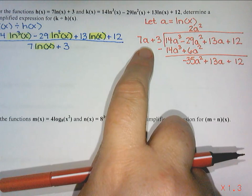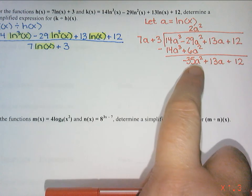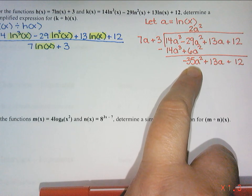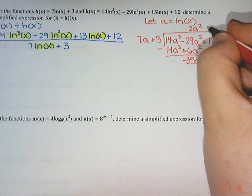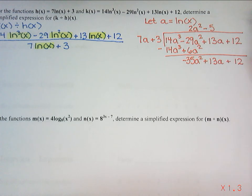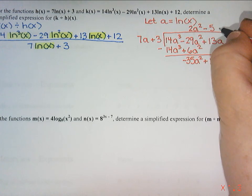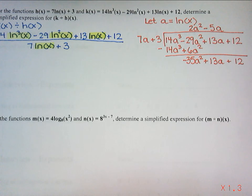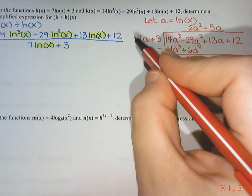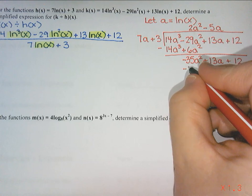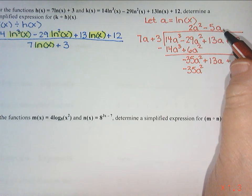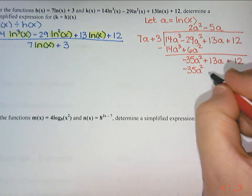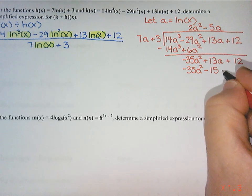Alright, we're going to go back to that first term 7a. How do we turn that into a negative 35a squared? Well, to turn a 7 into a negative 35, we need to multiply by negative 5. And to turn an a into an a squared, I need another a. So negative 5a times 7a is negative 35a squared. And then negative 5a times 3 is negative 15a.